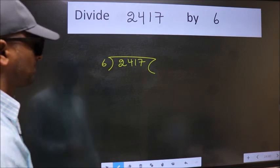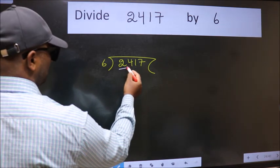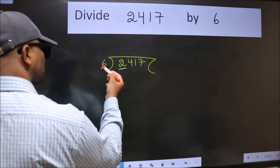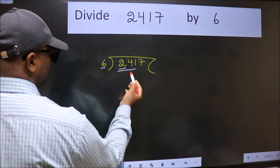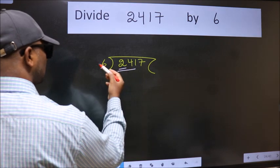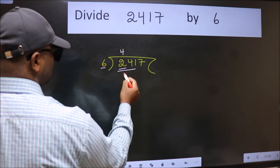Next. Here we have 2 and here 6. 2 is smaller than 6. So we should take 2 numbers, 24. When do we get 24 in 6 table? 6 fours is 24.